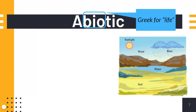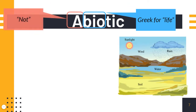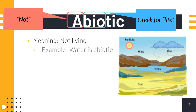Abiotic. Bio means life, but abiotic means not. So the meaning is not living. Examples are water, wind, sun, rain, soil. In your notebook, write down abiotic, meaning not living, and then make a picture — but maybe not of wind.